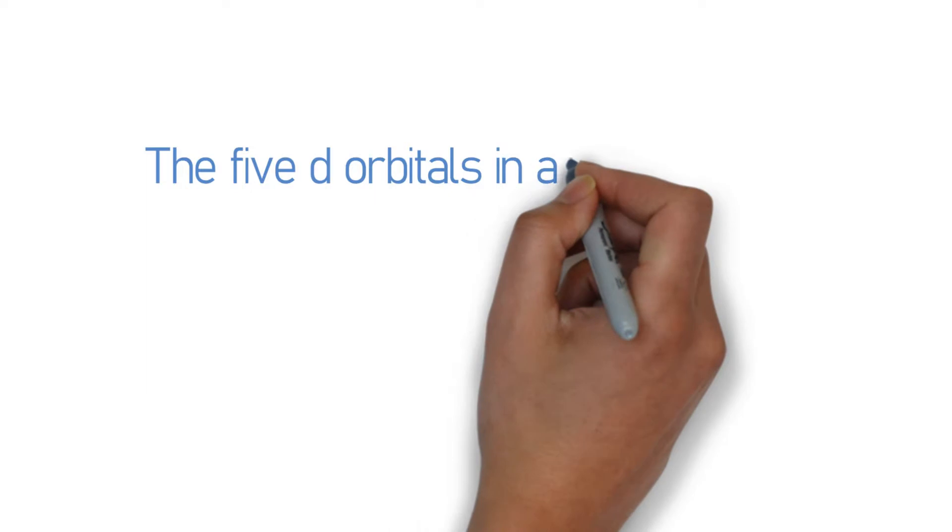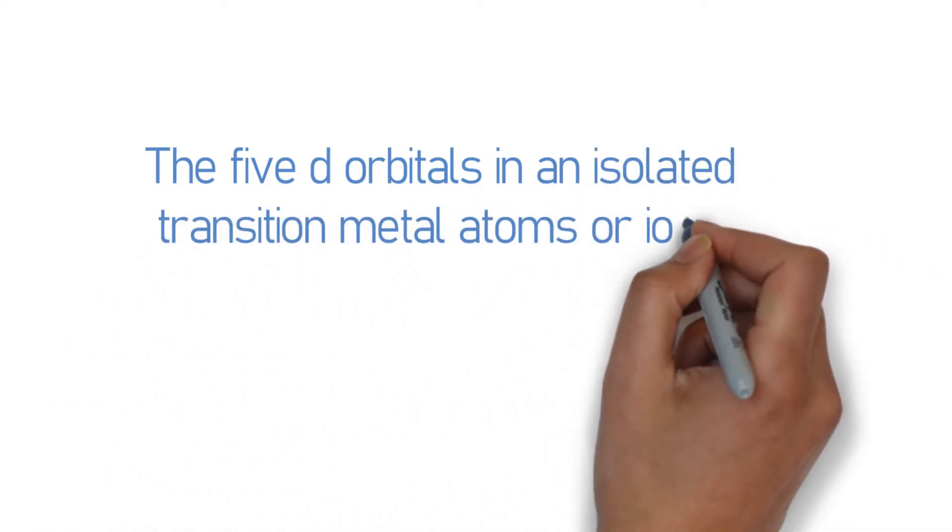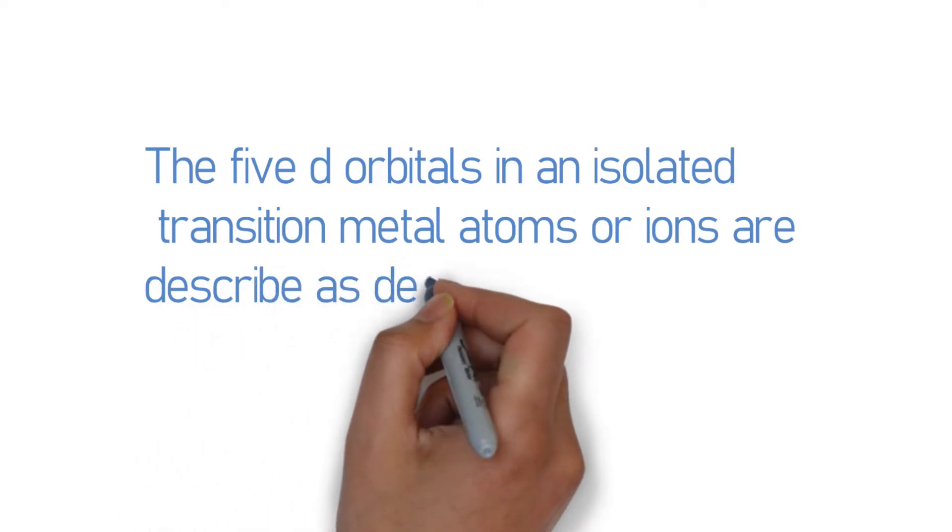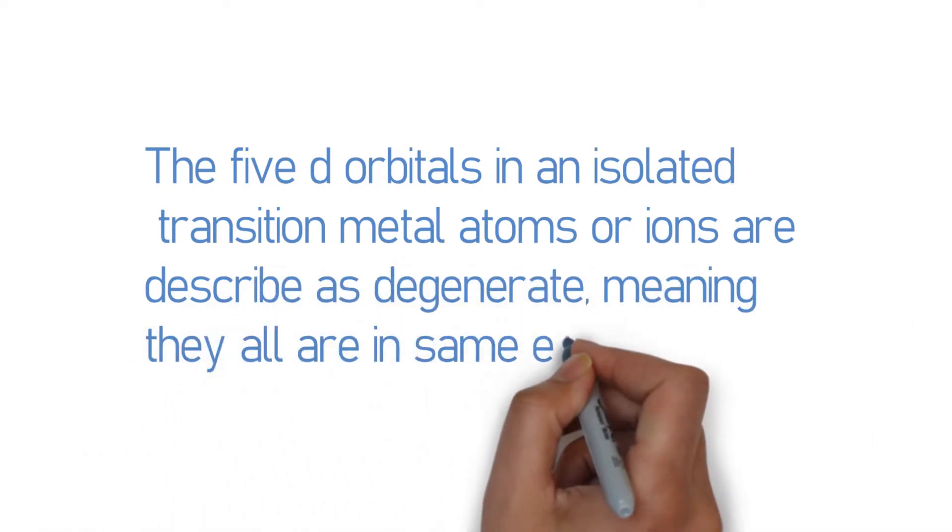The 5d orbitals in an isolated transition metal atoms or ions are described as degenerate, meaning they all are in the same energy level.